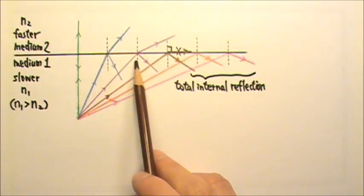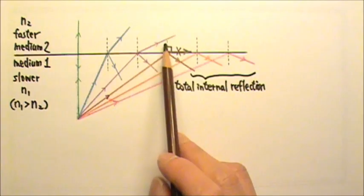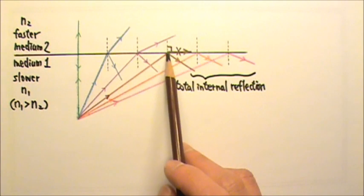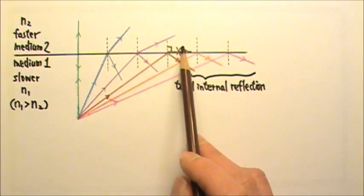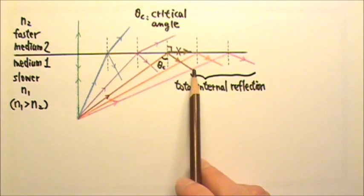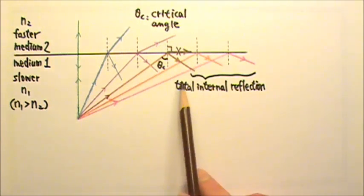As the angle of incidence increases, the angle of refraction also increases. Eventually, the angle of refraction will reach 90 degrees, at which point no part of the light ray will refract. There will only be reflection, and this is called total internal reflection.